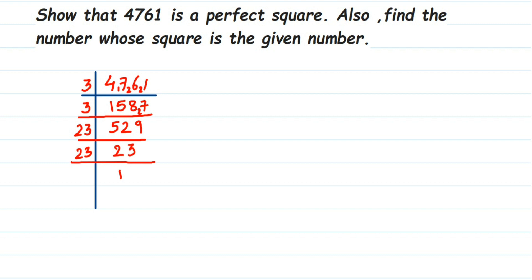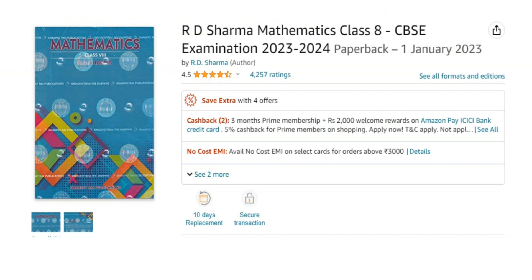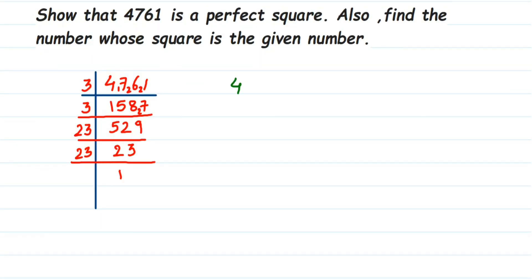So let's get back to the question. Once we have done this, I will rewrite this. 4761 is equal to all the factors what you got—it is 3 into 3 into 23 into 23.